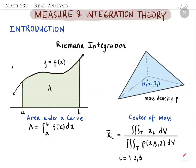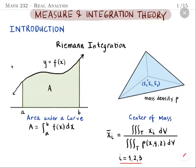Another example is calculating the center of mass of a certain body. In this figure we have a tetrahedron with mass density ρ. To calculate the i-th component of the center of mass, we integrate x_i over the tetrahedron divided by the total mass, where the total mass is obtained by integrating ρ over the tetrahedron T.